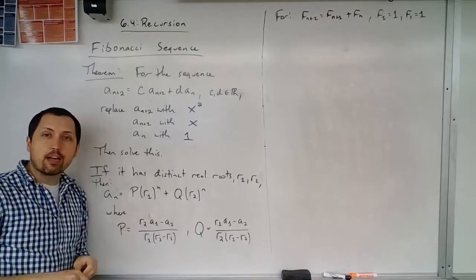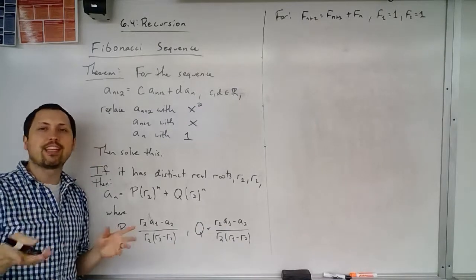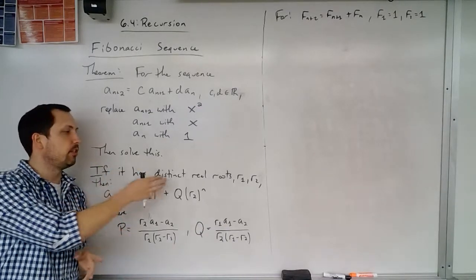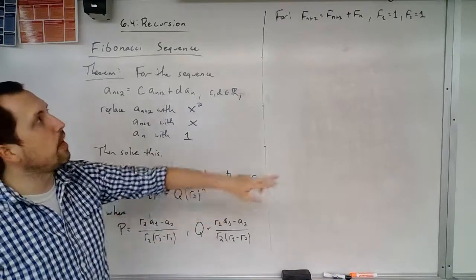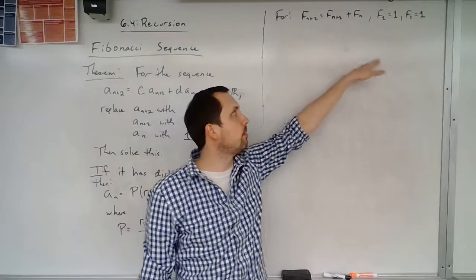That is the process. Now, if they're not distinct, then there's other theories about what you do, but in this case we will have distinct roots, so this is all that's necessary. So if we take a look now at the Fibonacci sequence, f sub n plus 2 equals f sub n plus 1 plus f sub n.